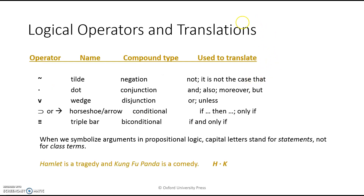We're going to introduce some symbols for the key logical operators, and you need to know these. The negation sign is the tilde, and that means 'not.' The dot is the conjunction sign — it means 'and,' and you would also use it to symbolize 'also,' 'moreover,' or 'but.' But is also a conjunction; it means 'and.'